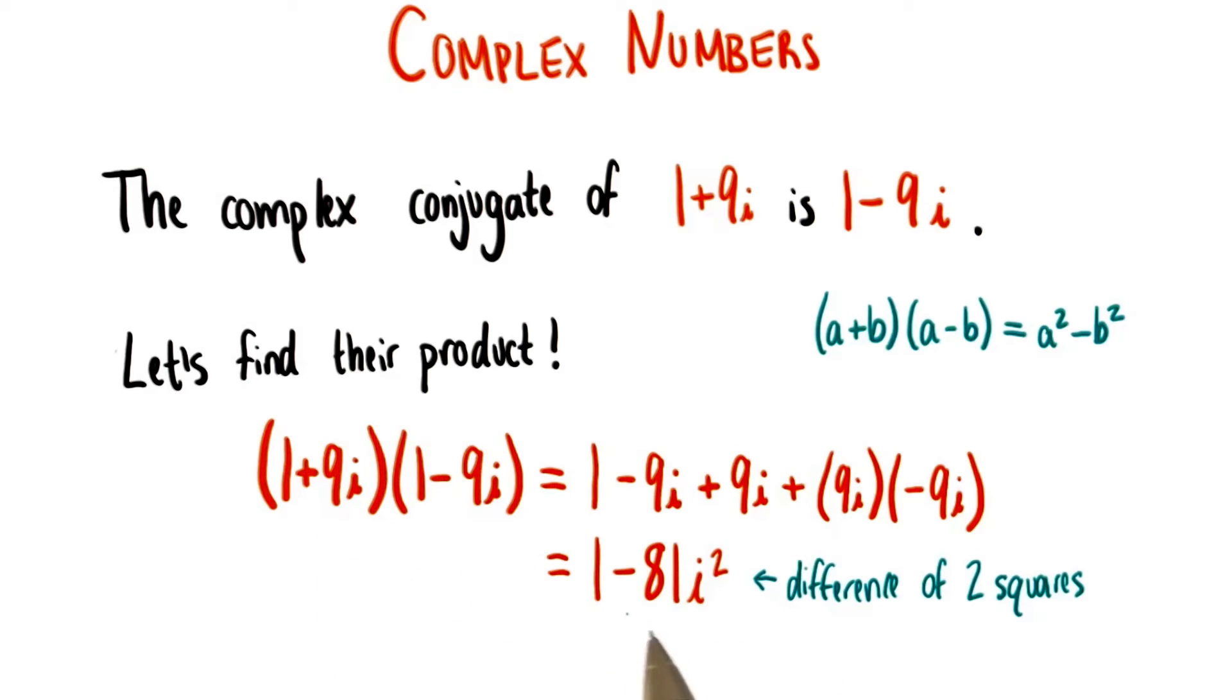Now, of course, we can simplify 81i squared because this is just a real number. i squared is just negative 1. And negative 81 times negative 1 is positive 81. So our answer is 82.